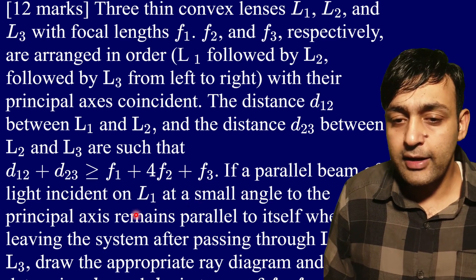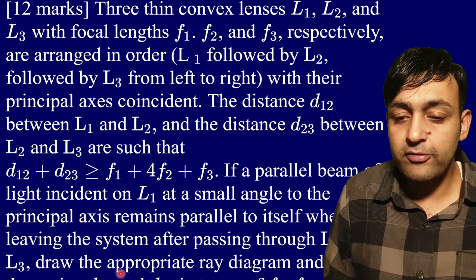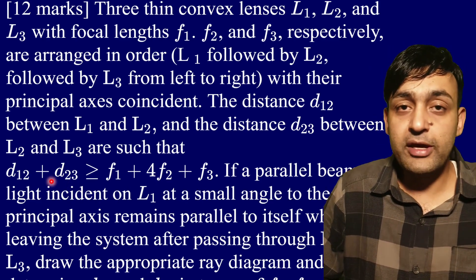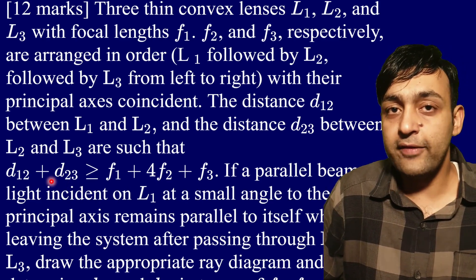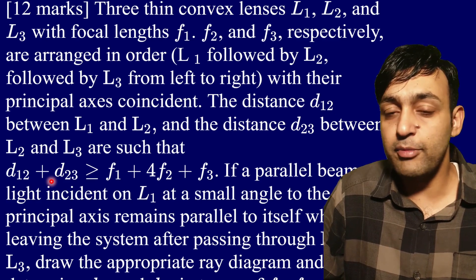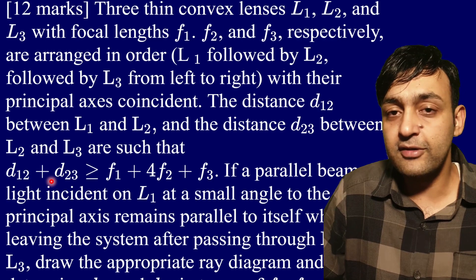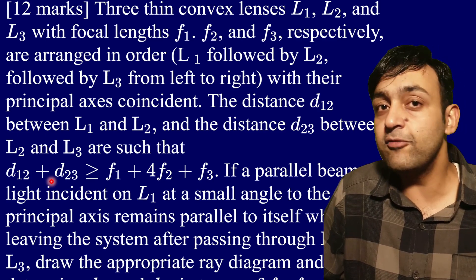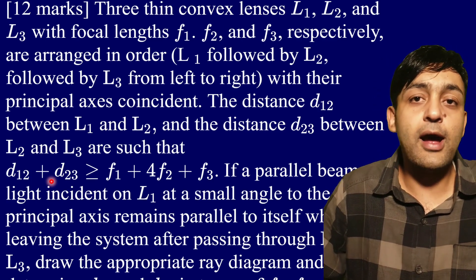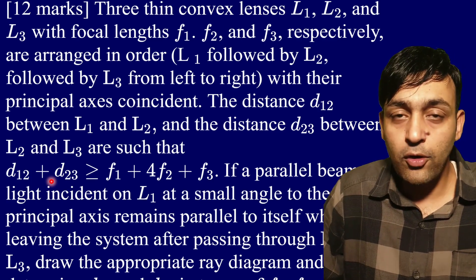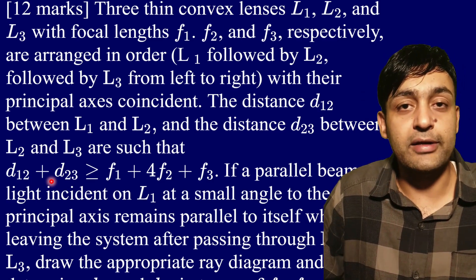Again, we have to determine the value of d12 and d23 if the initial rays which were making a very small angle with the principal axis were coming parallel, that means they are coming from infinity, and after emerging from lens L3 they are again parallel and also making the same angle that they were making initially.